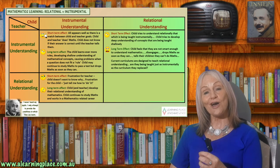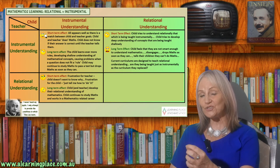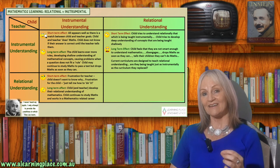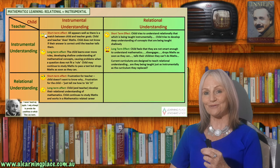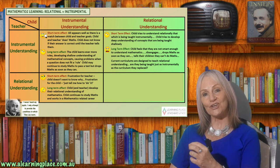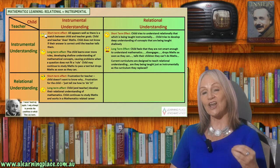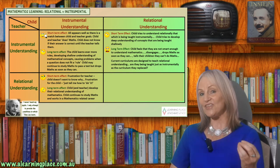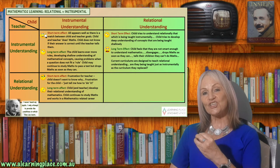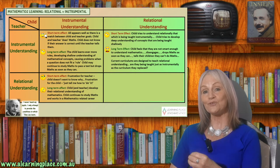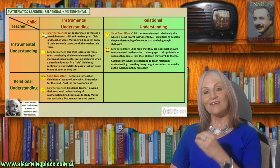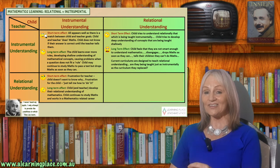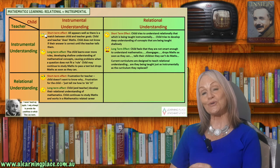What if the child wants to learn relationally, wants to understand the maths that they're learning, and the teacher is teaching instrumentally? This is the saddest situation of all. The child is trying to learn relationally what is being taught in a shallow way. The child is trying to find the relationships and the connections, but they're not being taught explicitly. The child decides that they are not smart enough to understand maths. They disengage from maths, they end up dropping maths, and then as adults, they tell their children that they were no good at maths either.